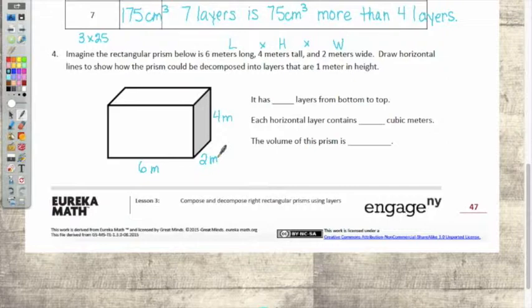Now it says draw horizontal. So which way are we going to do it? Yes. Loaves of bread, subway sandwich, or layers of the earth? Layers of the earth. Layers of the earth is horizontal. Okay. All right. Draw horizontal lines to show how the prism could be decomposed into layers that are one meter in height. So if I'm doing horizontal, I'm going to need four equal parts, one meter each. So how many lines do I draw? Three. Three. Very good.